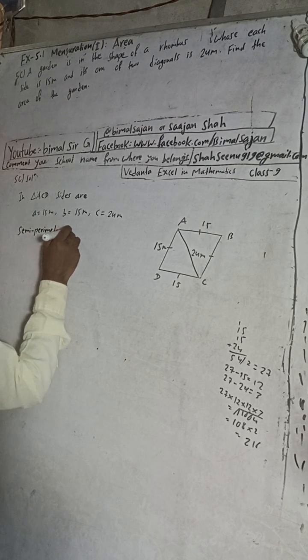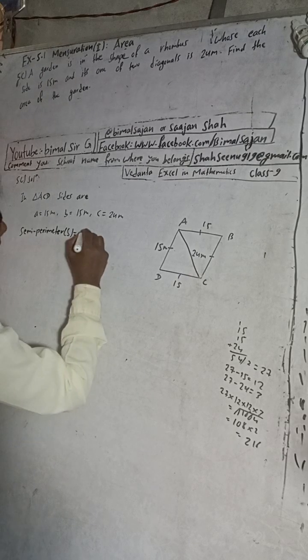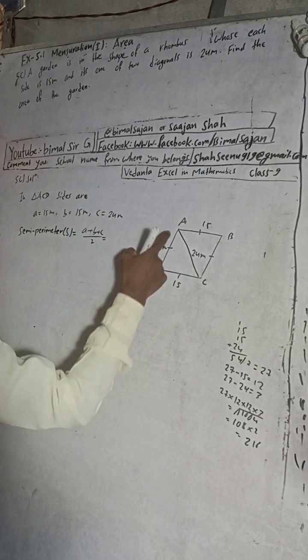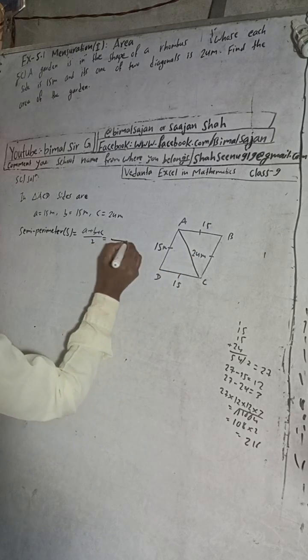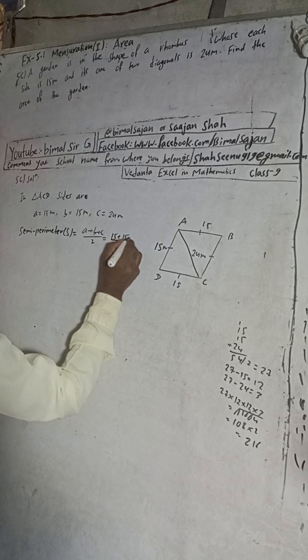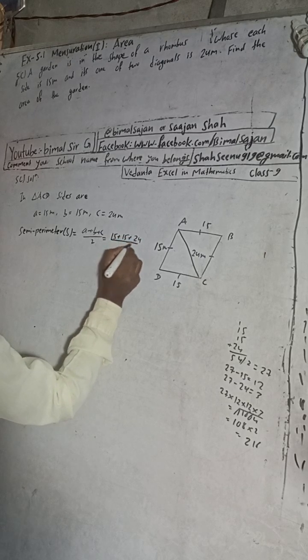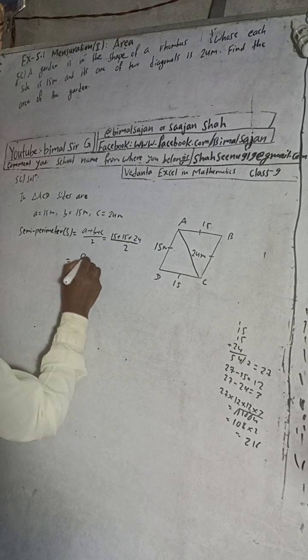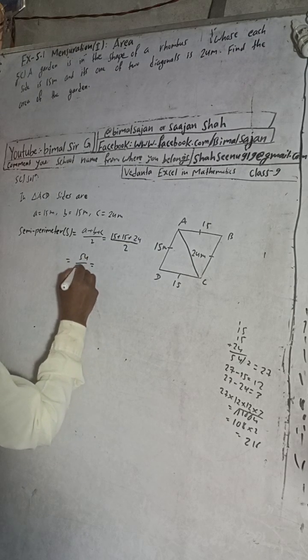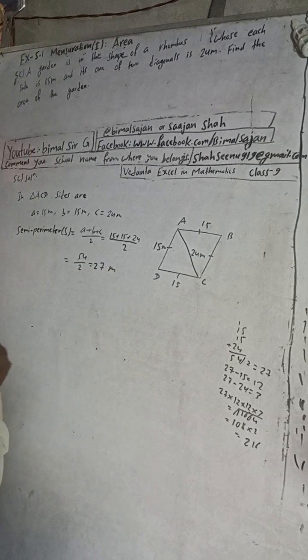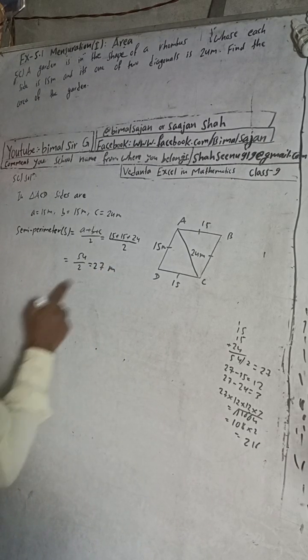Semi-perimeter s means sum of all sides: a plus b plus c by 2. Sum of all sides, this plus this plus this. Now here when we add this all, 15 plus 15 plus 24 by 2, we will get here 54 by 2, that means this is here 27 meters.